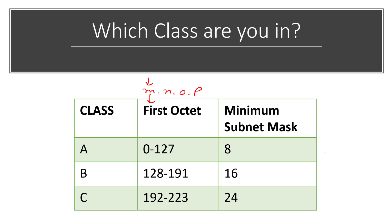Let's look at some quick examples. Take 10.2.1.5 — the first octet is 10, which lies between 0 and 127, so this is a class A IP address. Another IP address you may have used commonly is 192.168.0.1, which is generally your router's IP address. From the first octet of 192, you can see that this belongs to class C.